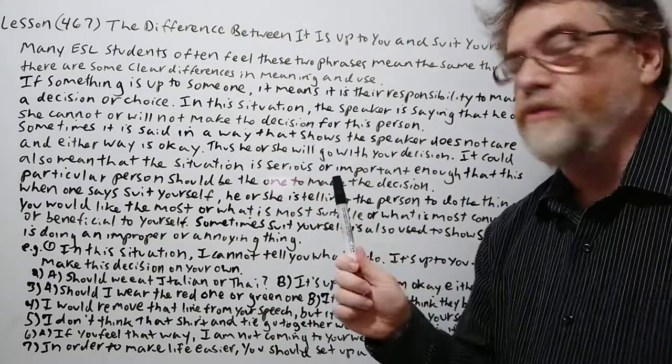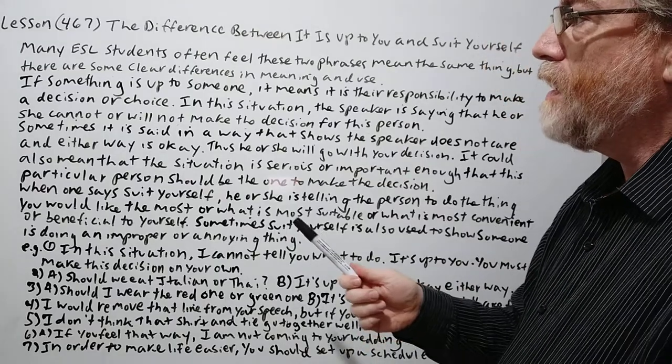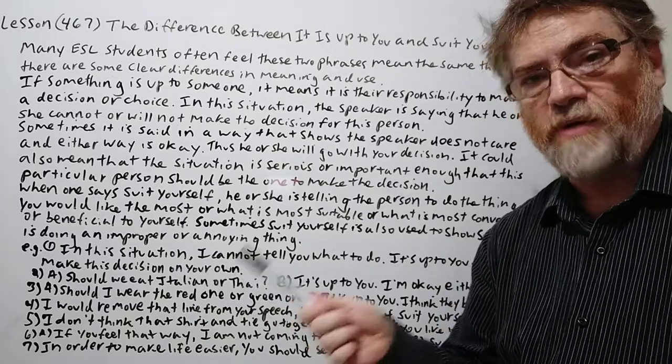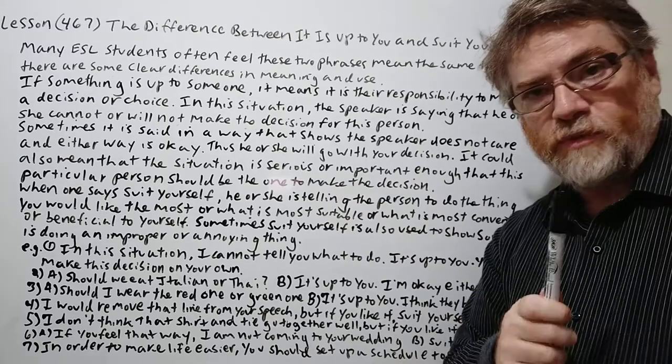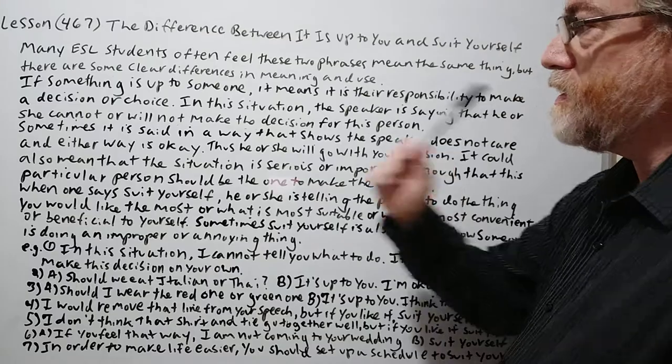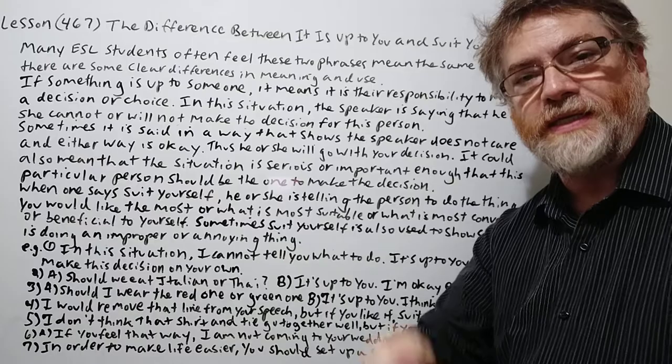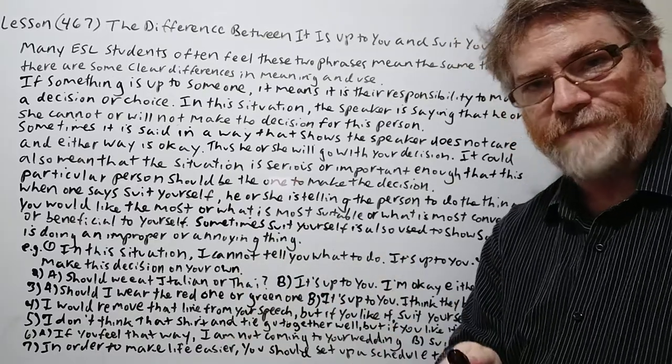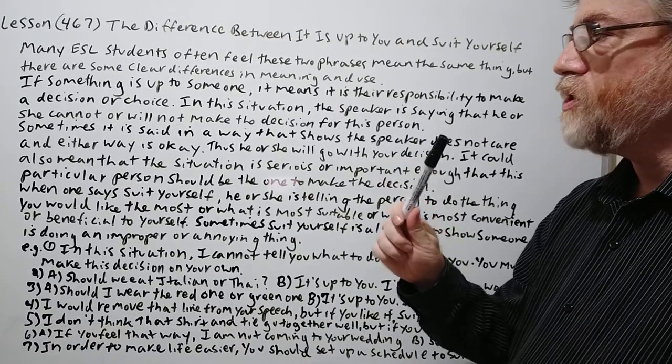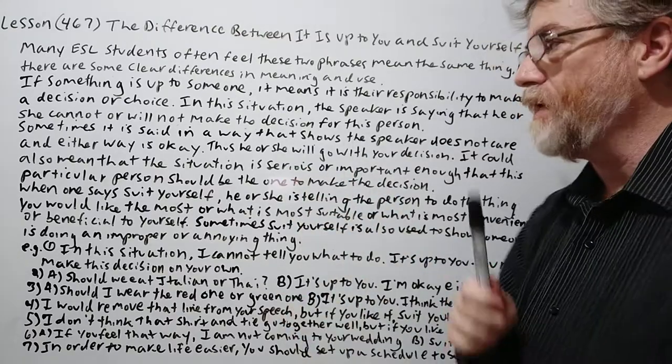Many ESL students often feel these two phrases mean the same thing, but there are some clear differences in meaning and use. If something is up to someone, it means it is their responsibility to make a decision or choice. So 'it's up to you' - the focus is really on choice, on decision. Somebody must make a decision. In this situation, the speaker is saying that he or she cannot or will not make the decision for this person.